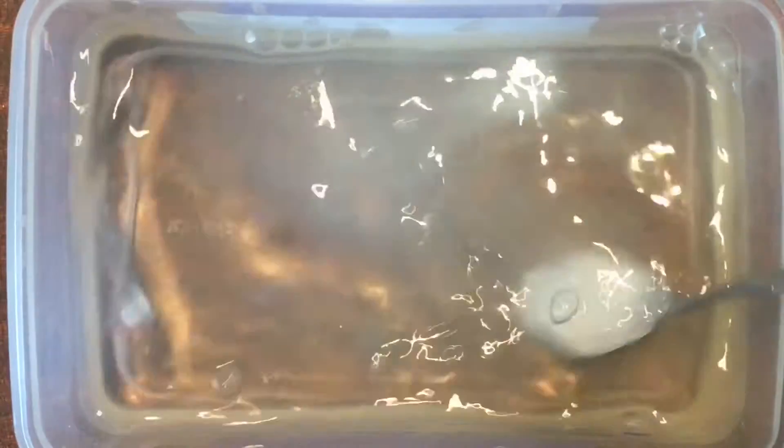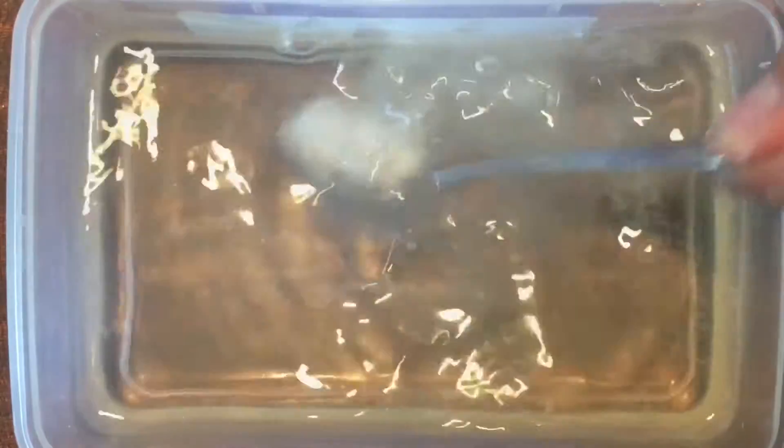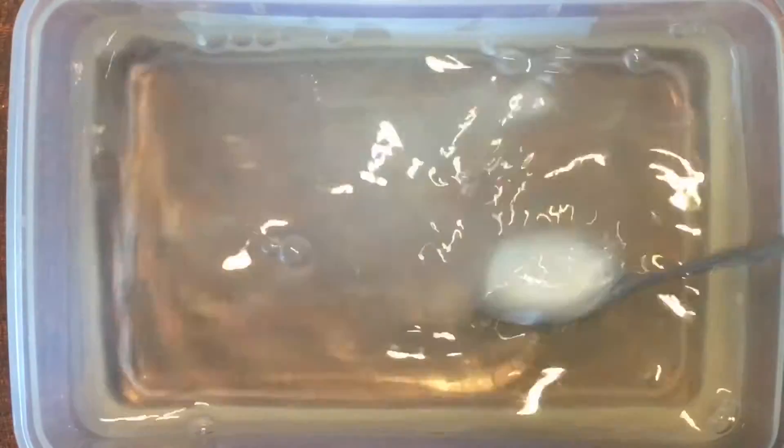First of all, mix one teaspoon of baking soda into a container of water that's longer than the test tubes are high.